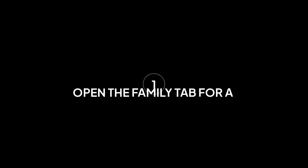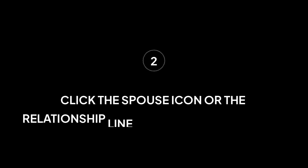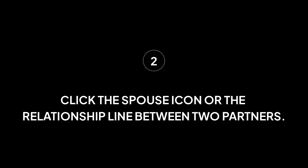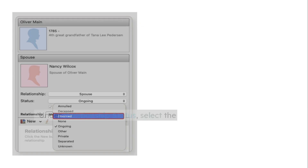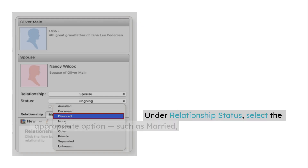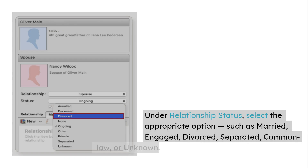Here's how to do it. Open a person's Family tab and click the spouse icon or the relationship line between two partners. Choose Edit Relationship. Under Relationship Status, select the appropriate option, such as married, engaged, divorced, separated, common-law, or unknown.